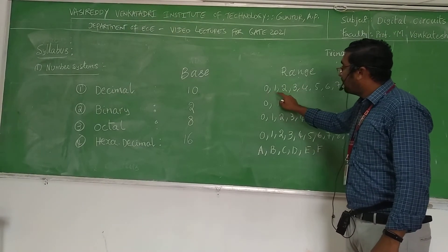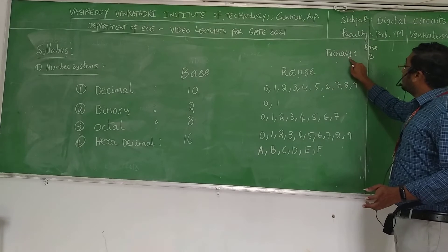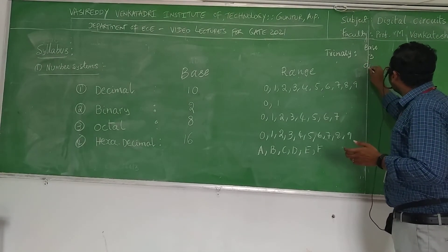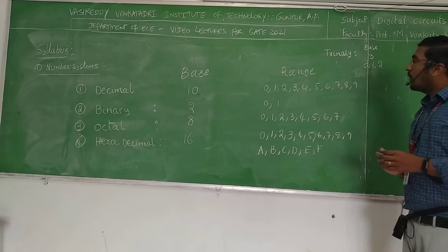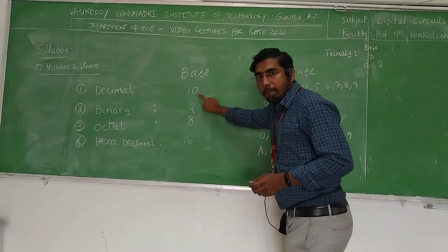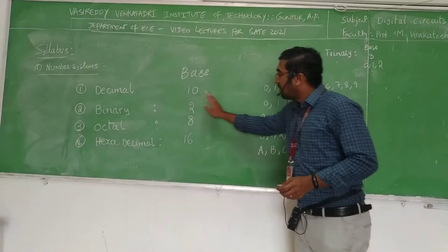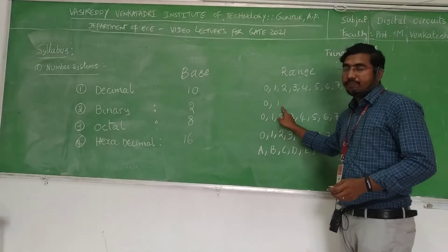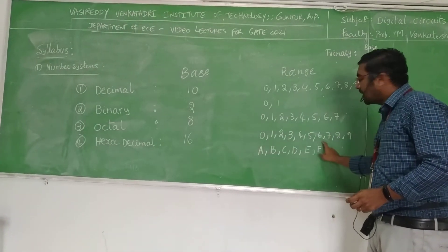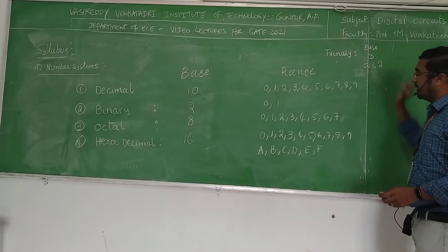Range contains all the different distinct digits present in a given number system. So for trinary, since the base is 3, the range is 0, 1, and 2. One important understanding: the total digits present in the range will always be equal to the base. For example, binary has 2 digits, octal has 8 digits, hexadecimal has 16 digits, and trinary has 3 digits: 0, 1, and 2.